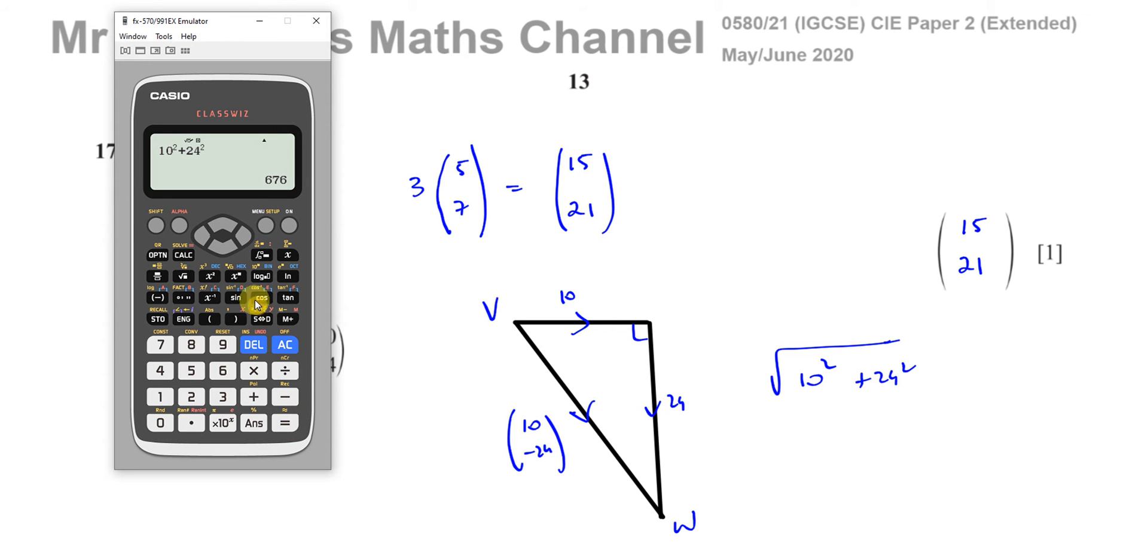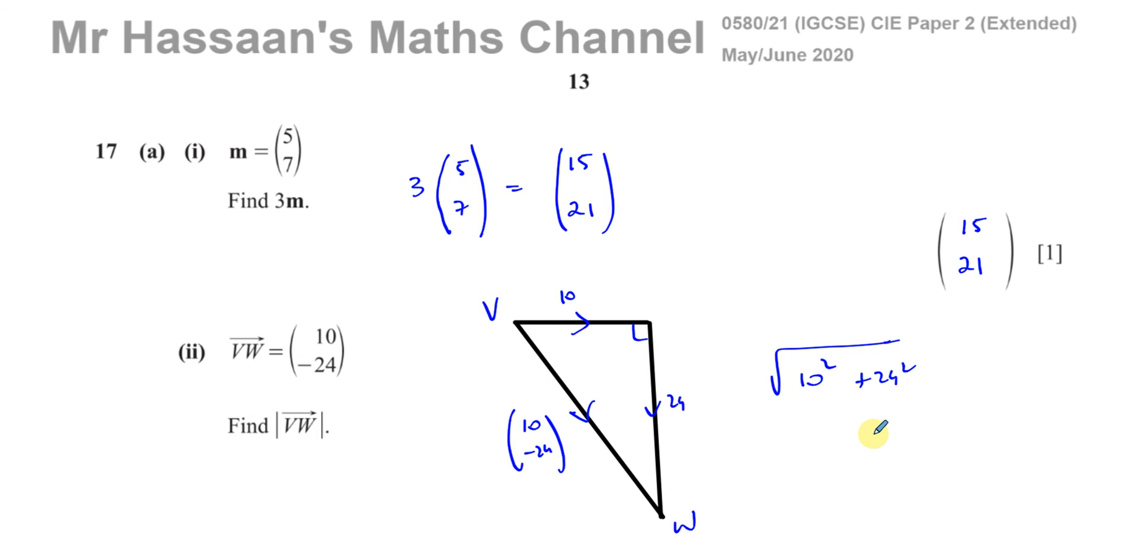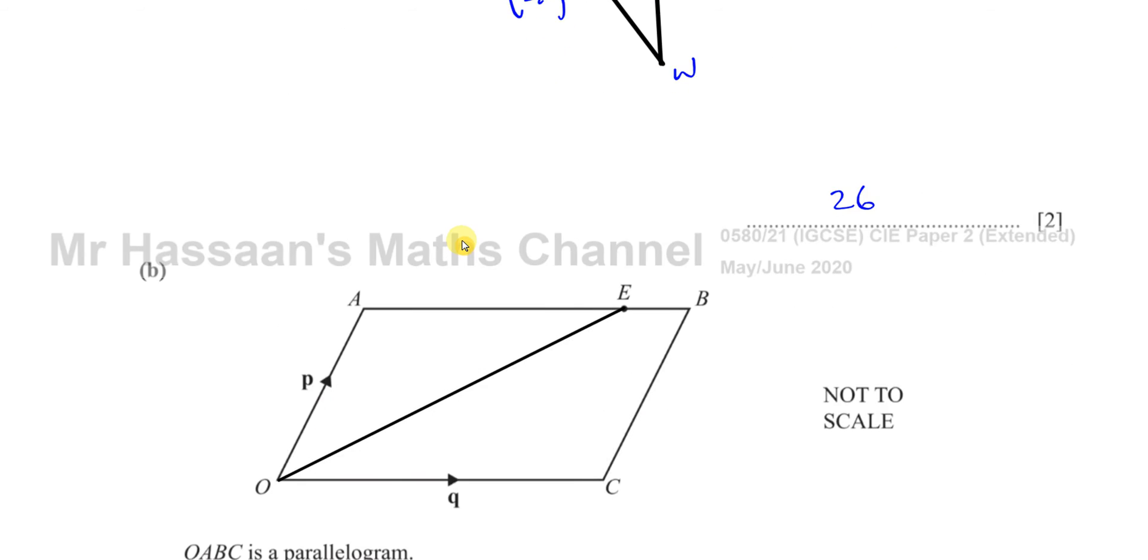So it's going to give me 26 because 5, 12, 13 triangle, yeah, 26. This is going to give me 26 and there's the answer for number 2, part 2. For 17, that's A part 1 and 2 and now we're going to go on to part B.